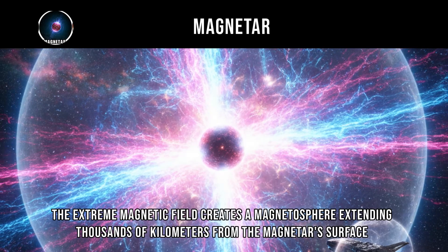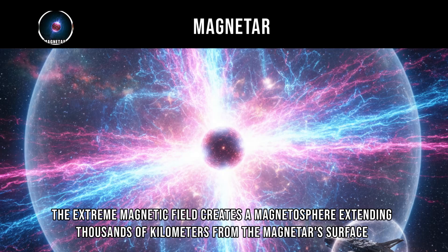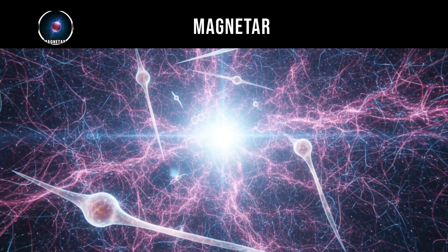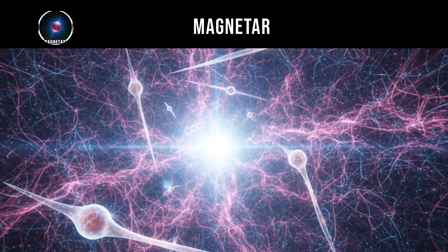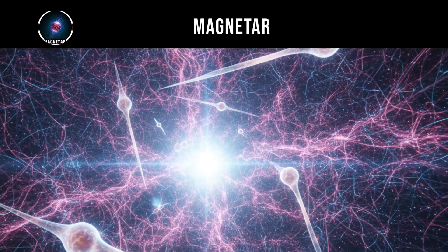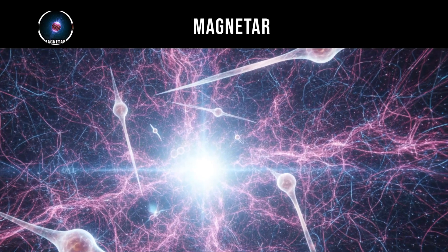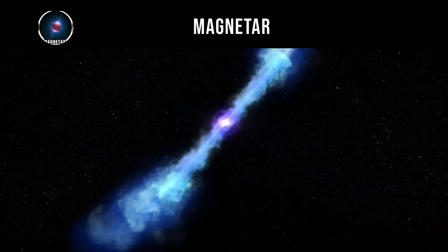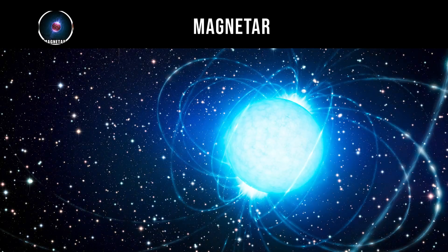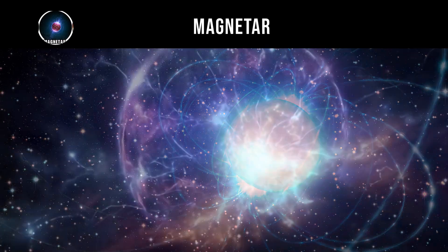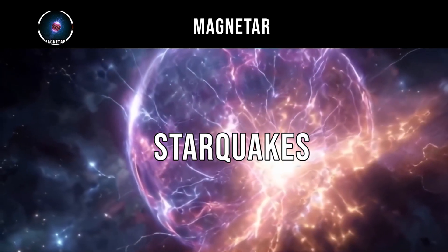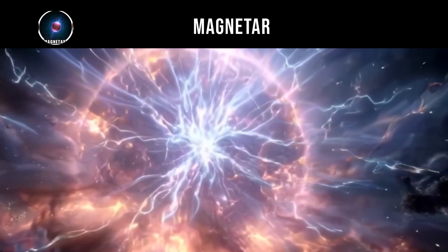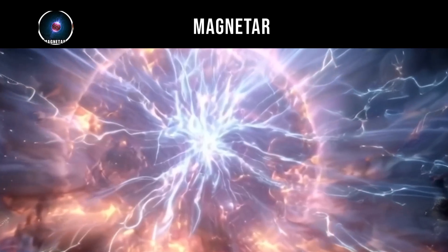The extreme magnetic field creates a magnetosphere extending thousands of kilometers from the magnetar's surface. Within this region, the magnetic field is strong enough to distort the shape of atoms, stretching them into needle-like configurations, and affects the propagation of light, causing photons to split into multiple particles or change polarization. Magnetars experience sudden magnetic field reconfigurations called starquakes, where the neutron star's crust cracks under magnetic stress, releasing enormous amounts of energy in the form of gamma-ray bursts and X-ray flares.